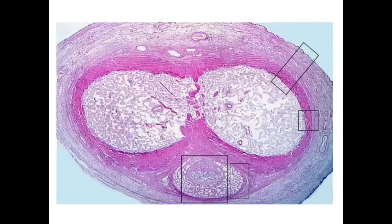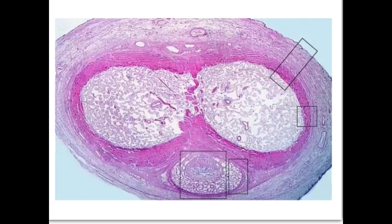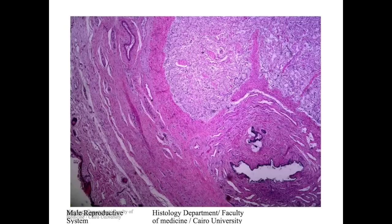In the actual section of the penis, we see two corpora cavernosa and corpus spongiosum with the penile urethra. The tunica albuginea is well-developed around the corpora cavernosa and less developed around the corpus spongiosum. The skin shows epidermis and dermis with no subcutaneous fat, allowing free movement of the skin during intercourse. The elastic fibers between the cavernous spaces are more numerous in the corpus spongiosum than in the corpora cavernosa.